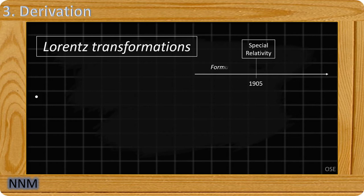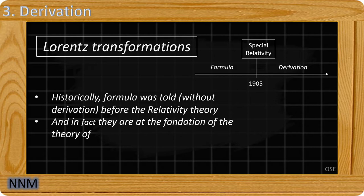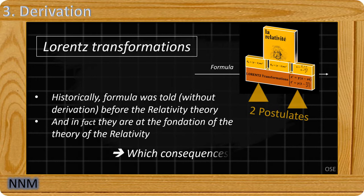Historically, these transformations were formulated, but not derived, by Lorentz before the theory of relativity. But in practice, relativistic calculations are effectively based and therefore come after the Lorentz transformations. What can be the consequences of these Lorentz transformations?